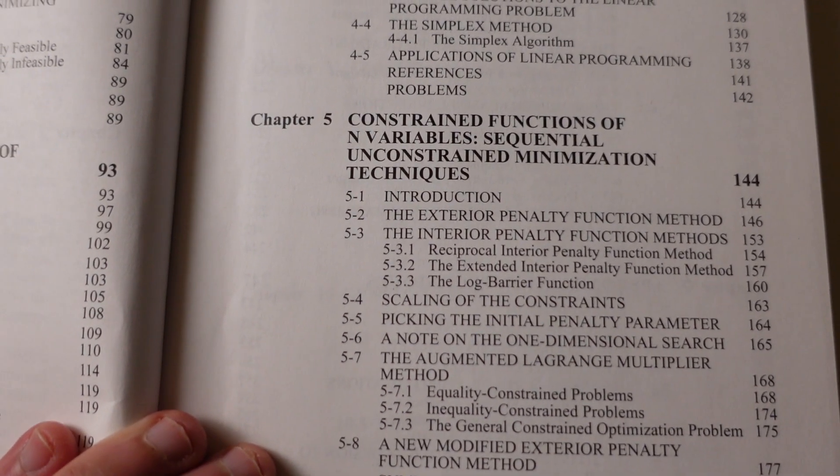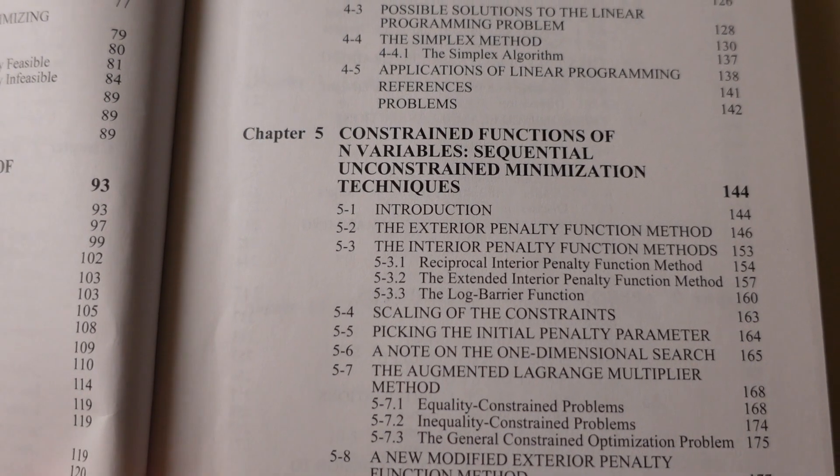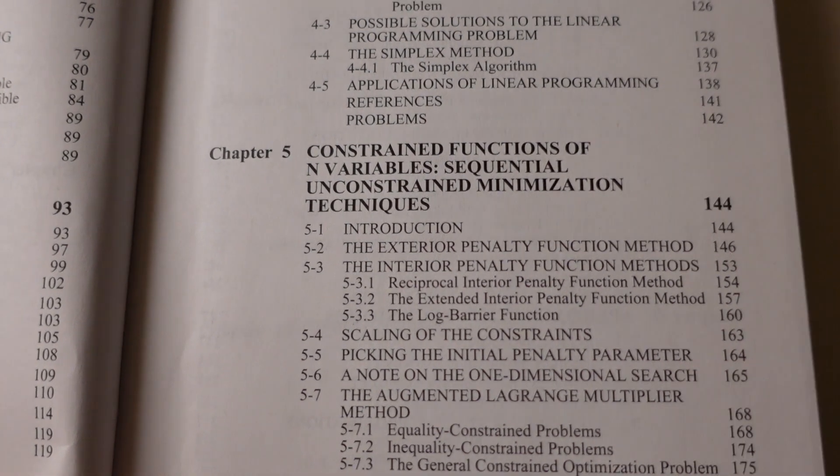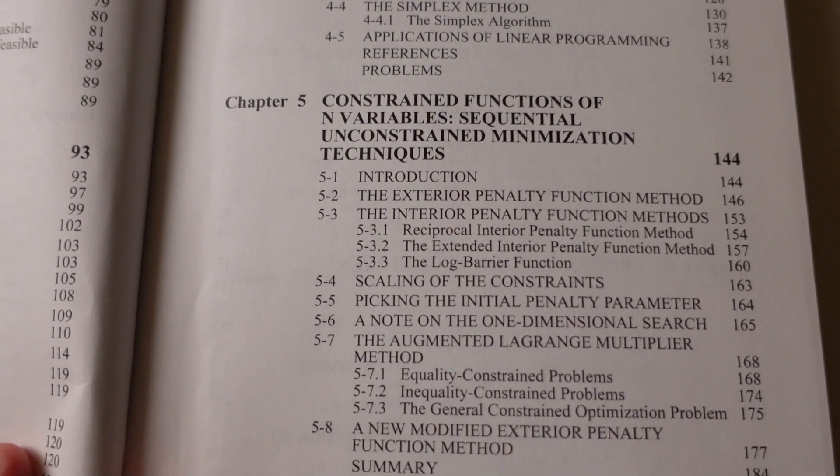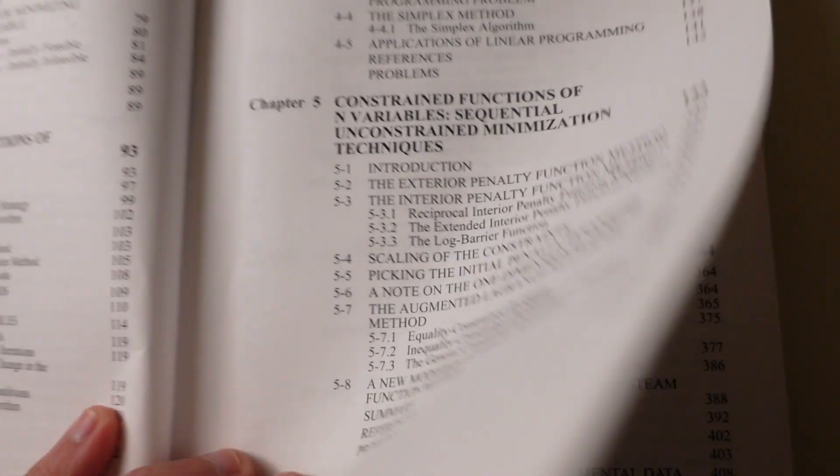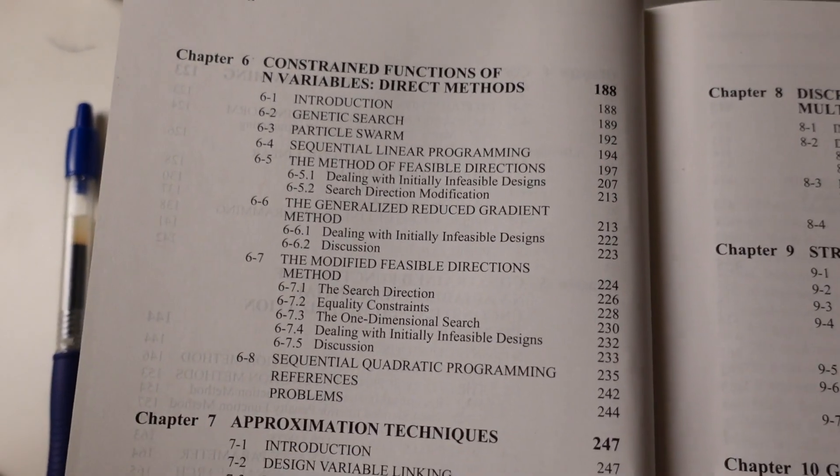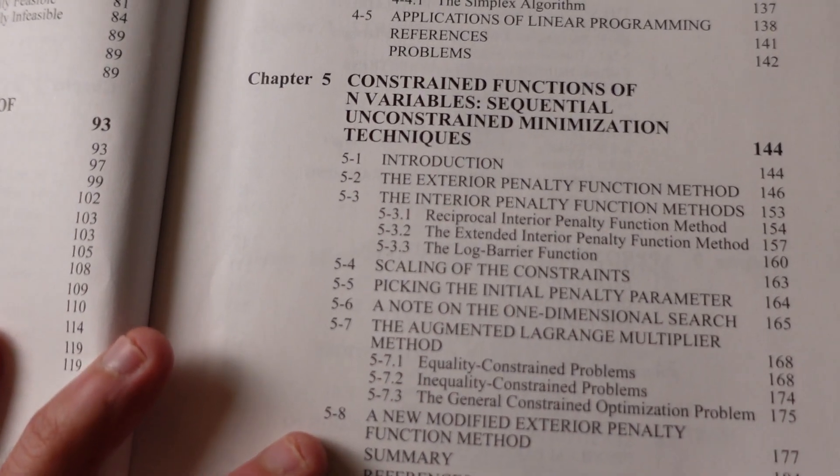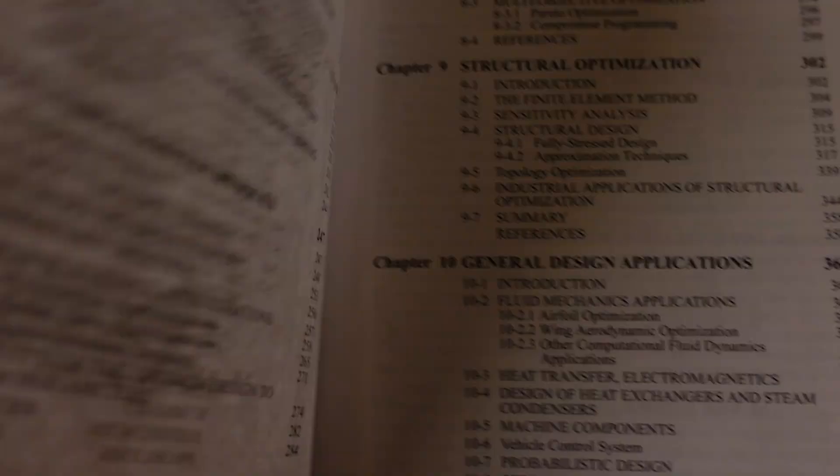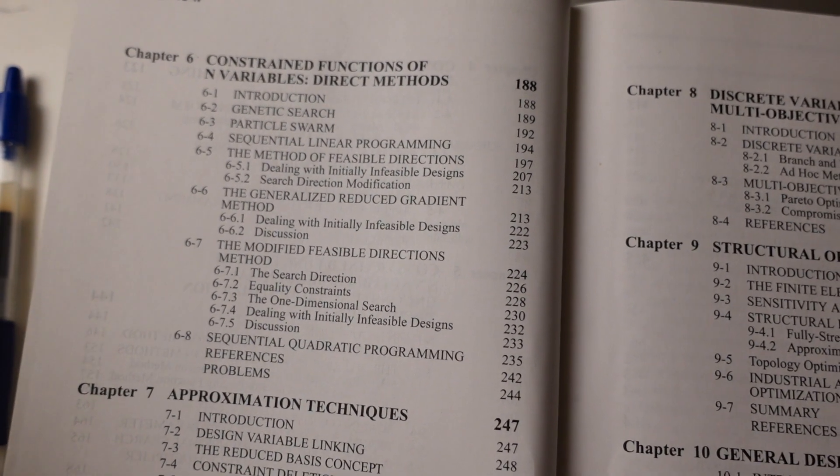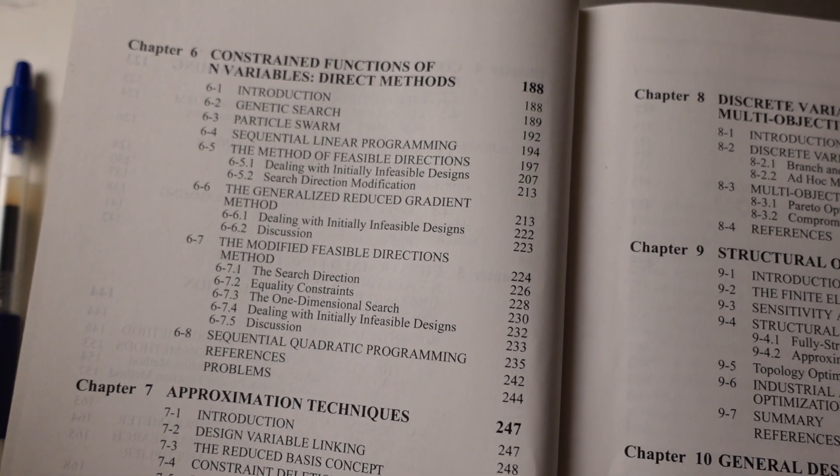Sequential unconstrained minimization techniques, specifically the exterior penalty function method, interior penalty function method, and other methods like the augmented multiplier method. Of course, each method is discussed in terms of costs and benefits associated with the method, constraint functions, and variables during methods.